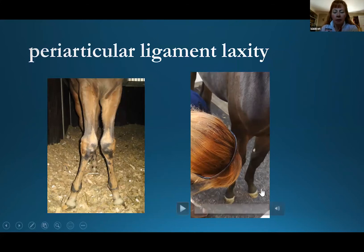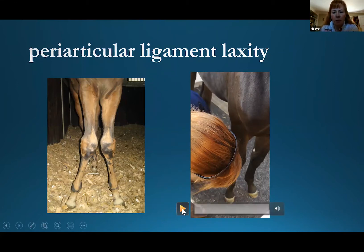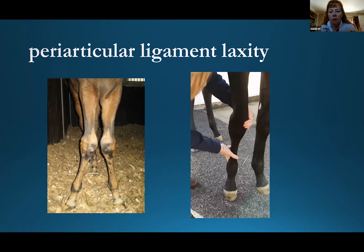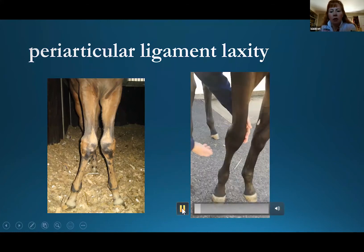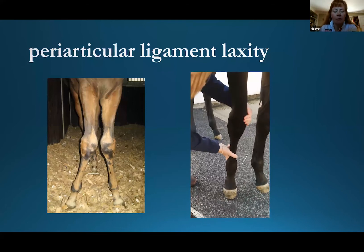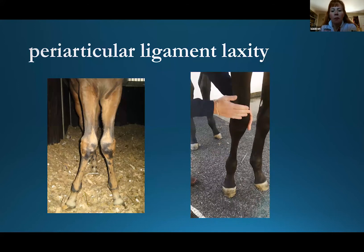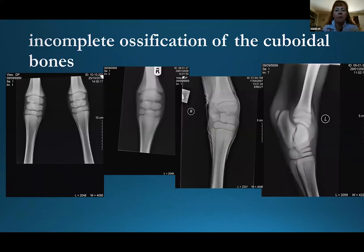Periarticular ligament laxity mostly affects the knees and the hocks, and it usually relates to the collateral ligaments — there's nothing really wrong with them, they're just not quite strong and not taut enough yet. When you examine the foal, if you can put your hand on the inside of the knee and push it into a normal position, that's periarticular ligament laxity. A good rule of thumb: if you're watching one of these foals walk towards you and in some steps it looks completely normal and in some steps it looks like it has an angular limb deformity, those foals almost certainly have a degree of periarticular ligament laxity.